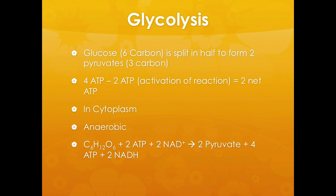This bottom formula is important to note because it is the formula for glycolysis: glucose plus two ATP plus two NAD+ yields two pyruvates, four ATPs, and two NADHs.